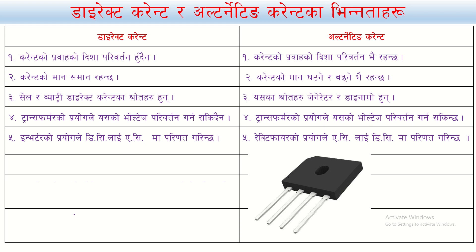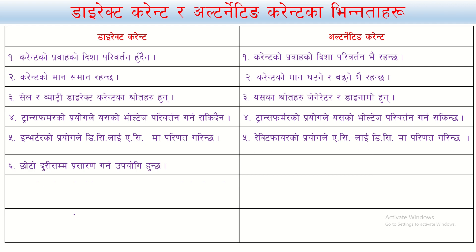Using the battery in this way, in small electronic devices we are using direct current. Just make the circuit in mobile phones, computers, and other electronic components — these all use direct current.